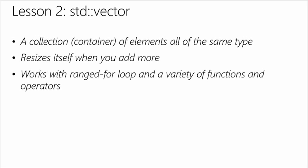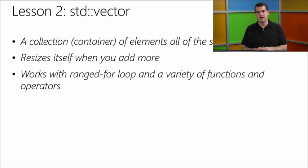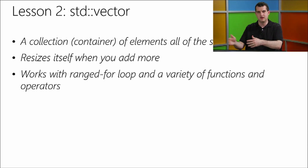Function templates are not the only kind of template — you can also have class templates. We had the unique_ptr example in the last module. std::vector is another example of a class template. A std::vector is a container that stores elements all of the same type — for example, a std::vector<int> stores a sequence of integers. It's an ordered collection: if you keep adding integers, they get appended to the back. It resizes itself automatically when you add more, so when you create it you don't need to know how many elements you'll have.